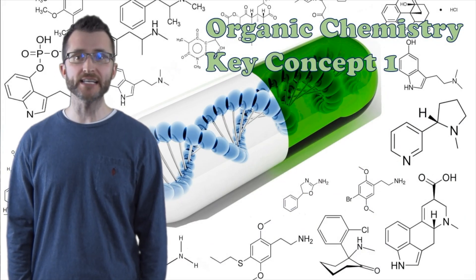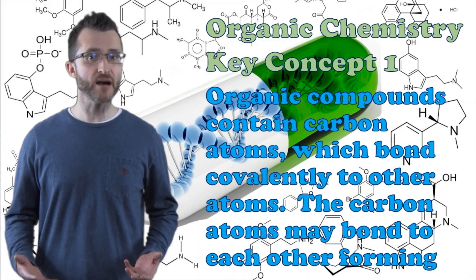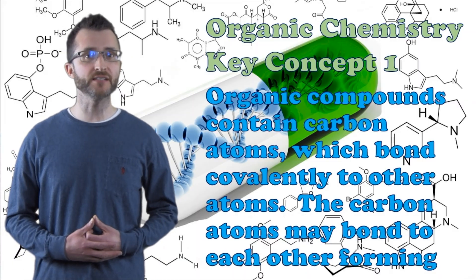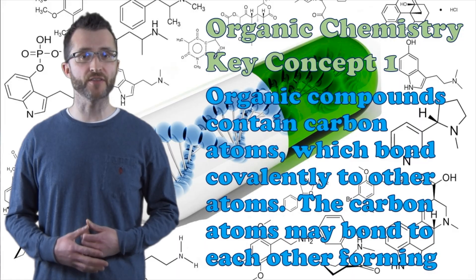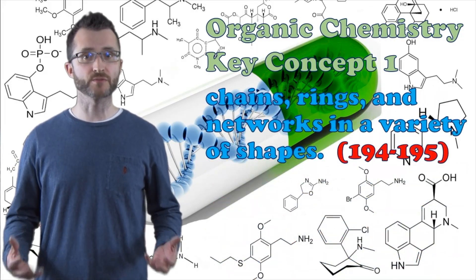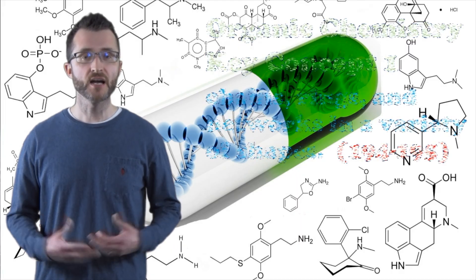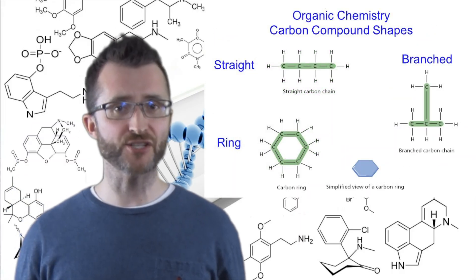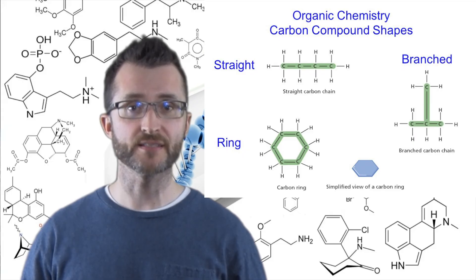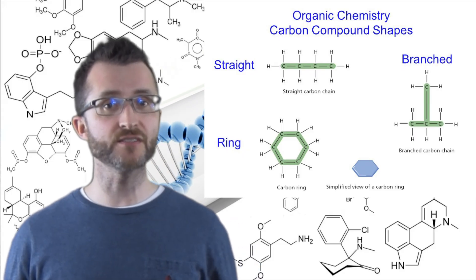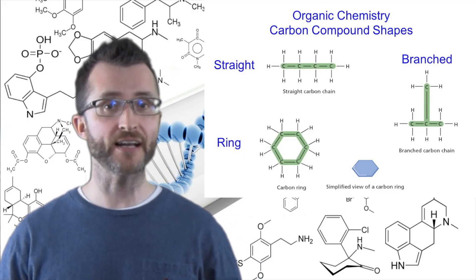Organic chemistry key concept one. Organic compounds contain carbon atoms which bond covalently to other atoms. The carbon atoms may bond to each other, forming chains, rings, and networks in a variety of shapes. Carbon is special — it can form four bonds, unlike other elements. This leads to a wide variety of different structures that can form.